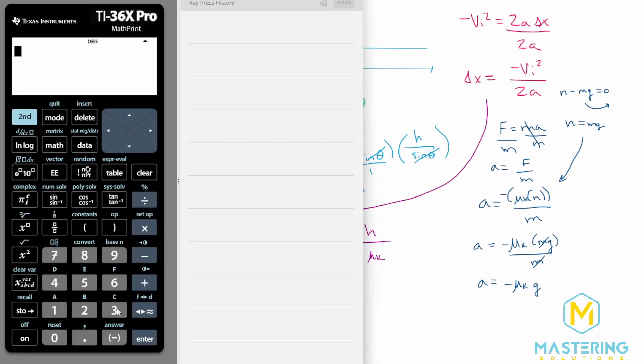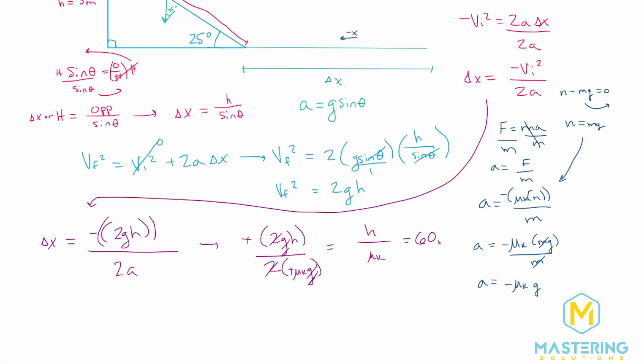So the height was 3 meters divided by the coefficient of kinetic friction was 0.050. So he will go 60 meters for this situation.